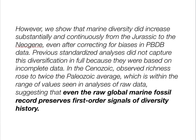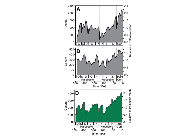Even the raw global marine fossil record preserves first-order signals of diversity history. This basically means that the original Sepkoski figure preserves the major patterns of diversity seen over the Phanerozoic, and that the big rise in the Mesozoic and Cenozoic is actually a real thing — we'll come back later in the semester to talk about why this might happen. Also, our mass extinctions are reproduced in basically all of our different versions, which should reassure us that these extinction events actually did happen.